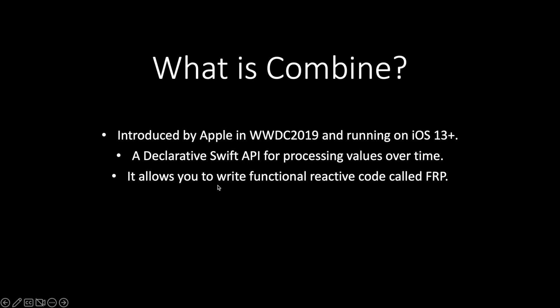Combine allows you to write functional reactive code, called FRP — Functional Reactive Programming. This is a special kind of functional programming where you are working with an asynchronous stream of values. You can modify or process those values by applying operators like map and flat map, among others. If you are familiar with third-party frameworks like RxSwift or ReactiveSwift, Combine is the inbuilt Apple equivalent — so you no longer have any dependency on those third parties.